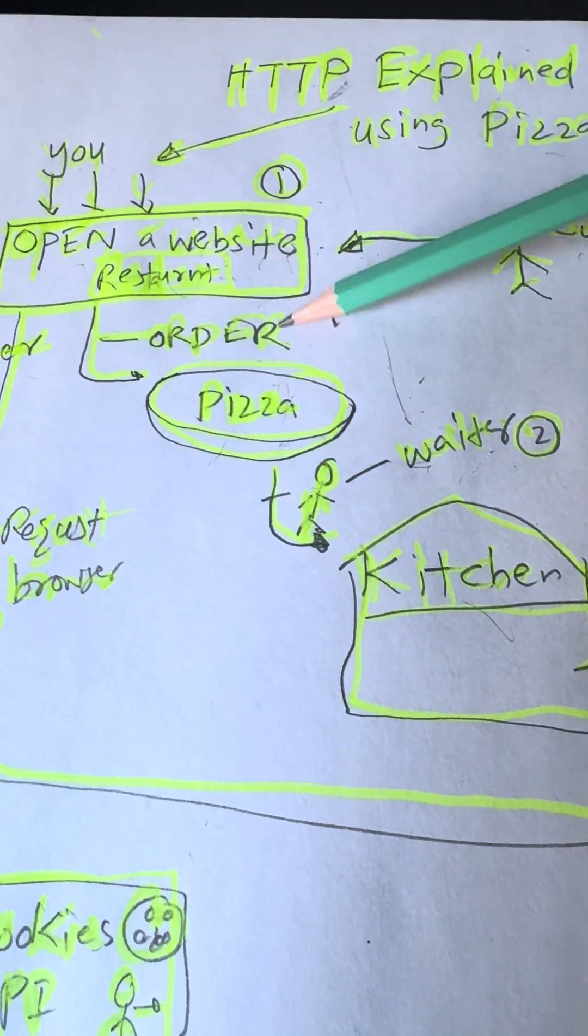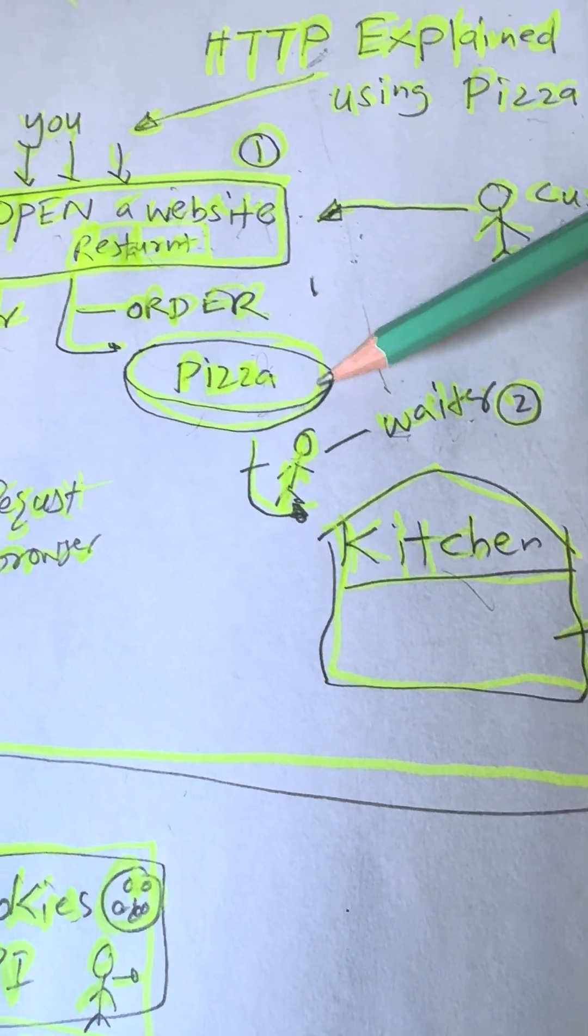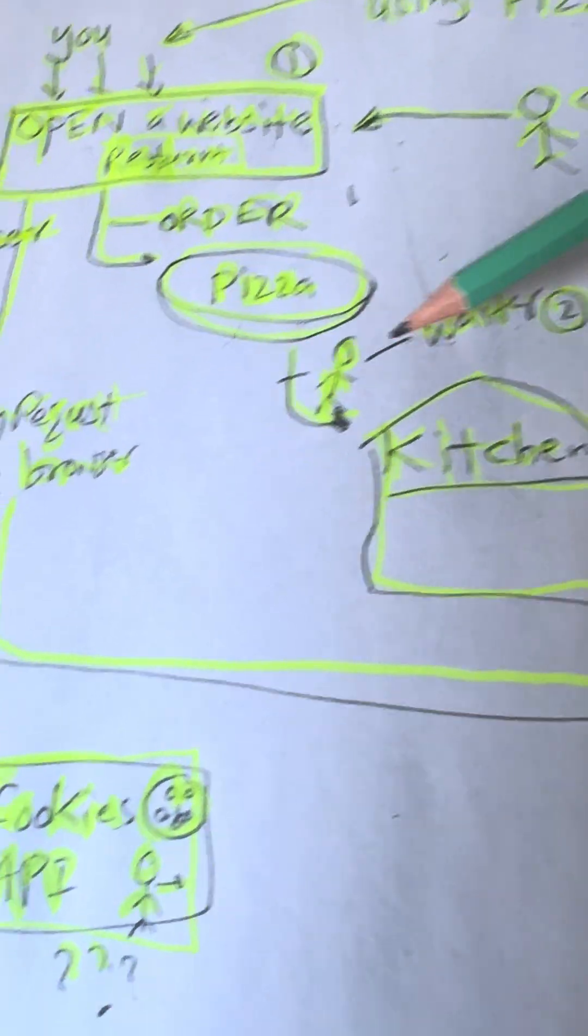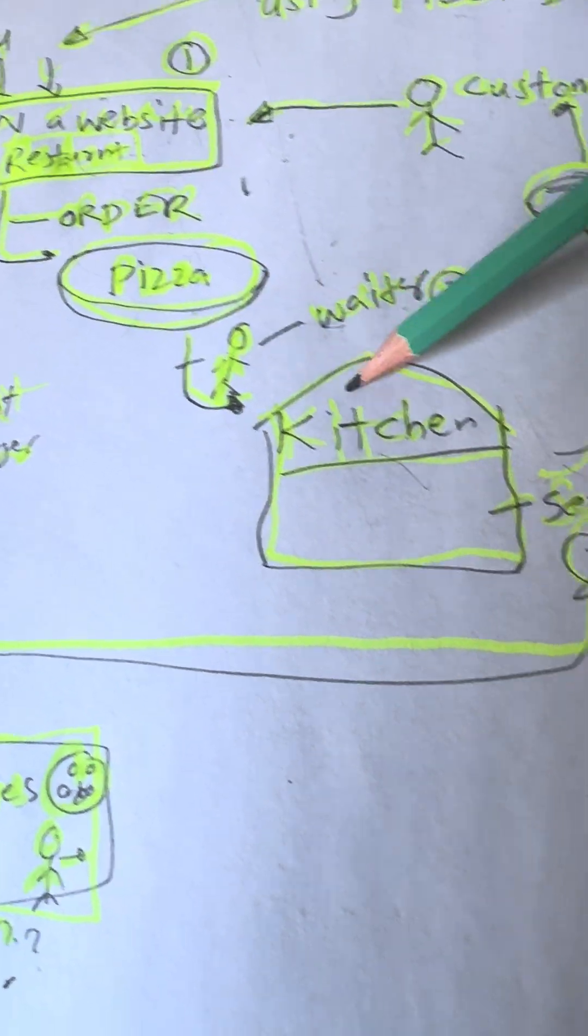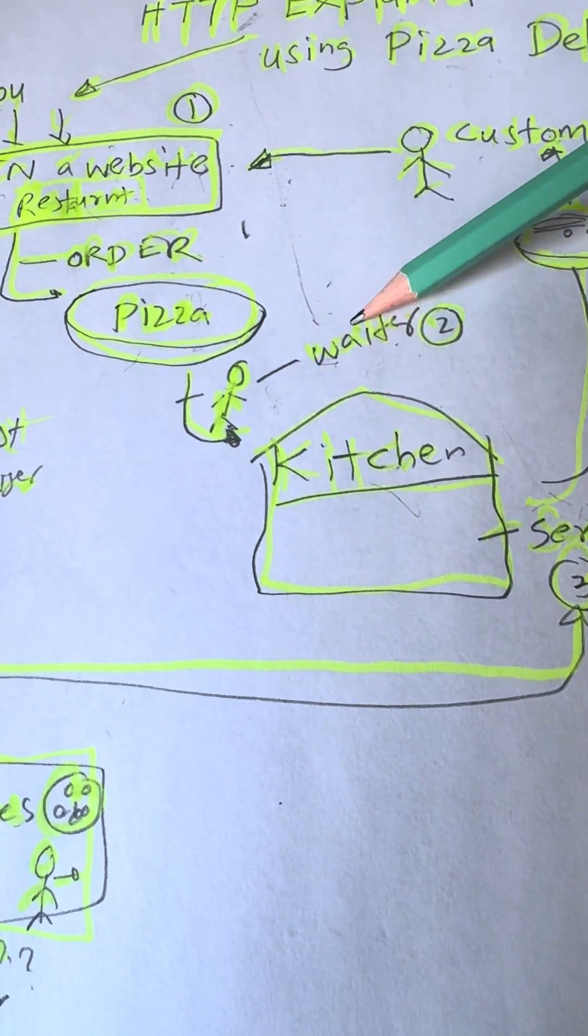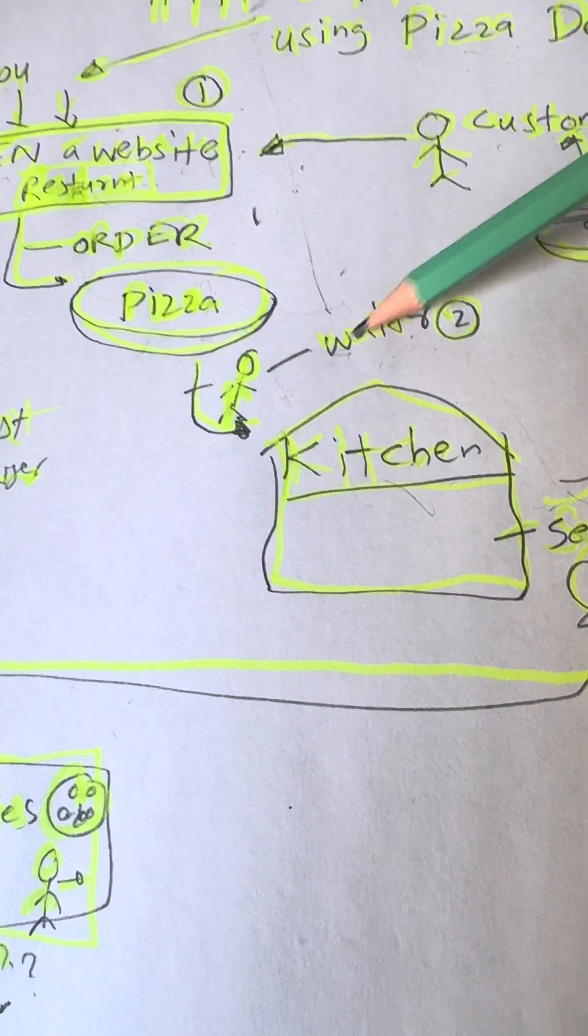You tell the website what you want, like ordering pepperoni pizza online. Simple, right? Now, who takes your order to the kitchen and brings back your pizza? This little guy, the waiter, takes your order and brings back your pizza.